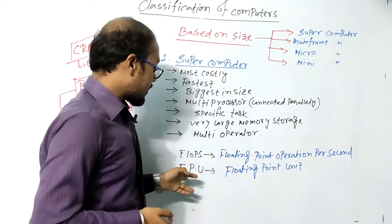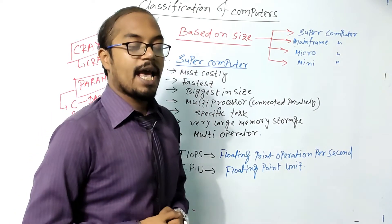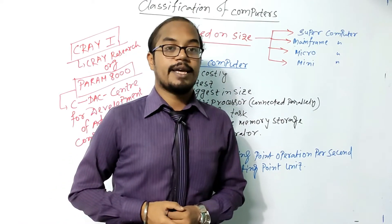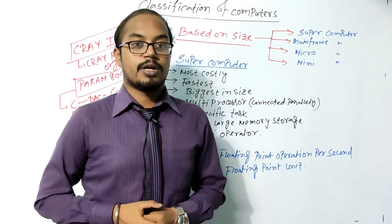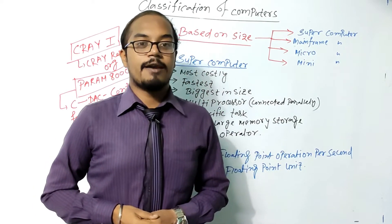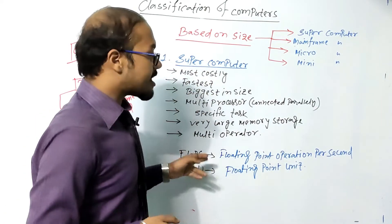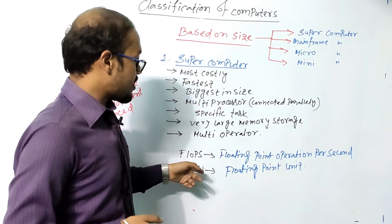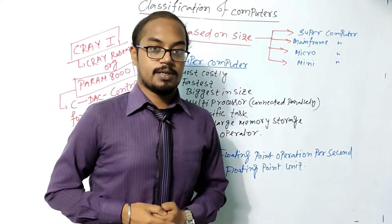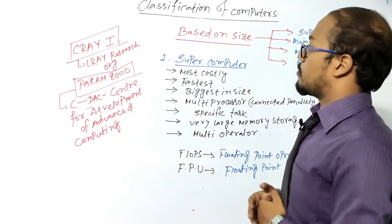Supercomputers also have an FPU — Floating Point Unit. As we know, computers work with various data types like integers, characters, and floats. Integers are whole numbers, characters are like A, B, C, D, and floats are decimals. The FPU is a dedicated section in the supercomputer to calculate decimal operations.